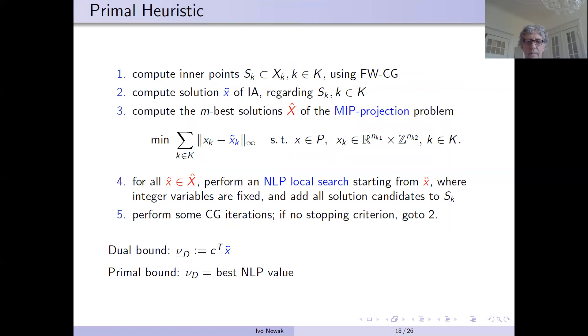So in the primal heuristic, we start with solving the convex hull relaxation which gives us a point which is not feasible, but it has a good objective value.